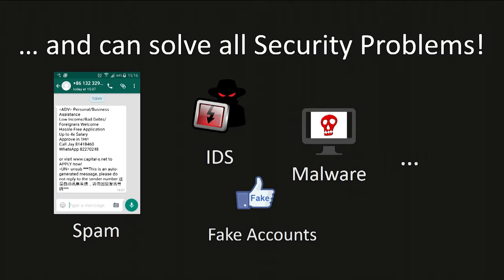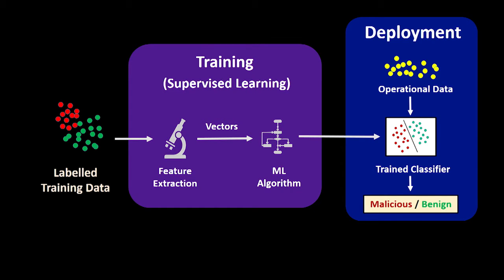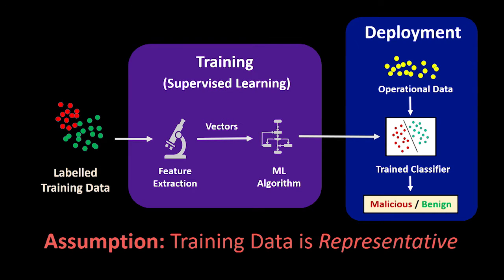Nearly every problem in computer security seems like a classification problem well suited to machine learning. What I want to do in my talk is raise some questions about how confident we can be in machine learning-based classifiers, and tell you about work my group is doing at the University of Virginia. All of these techniques start from a general model: you start with training data, hopefully labeled, build a model, deploy it, and hope it gives good results. The premise is that deployment data will be similar to training data — in the real world, this is often not the case, and in an adversarial context it's the worst case.